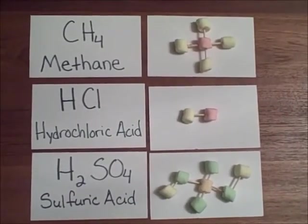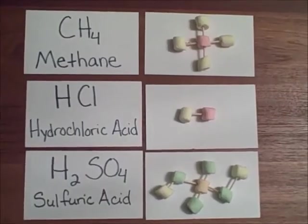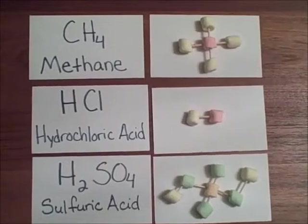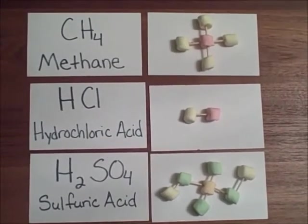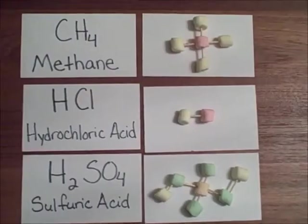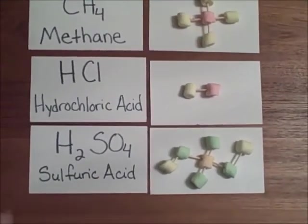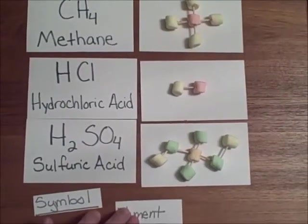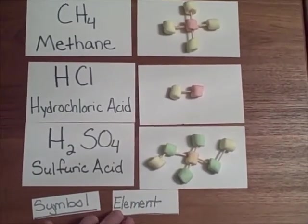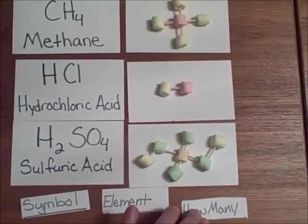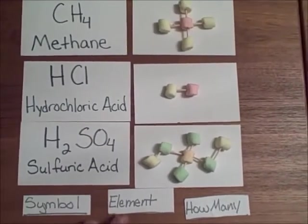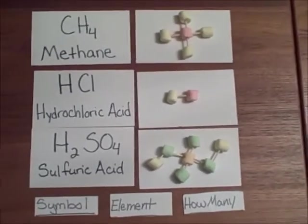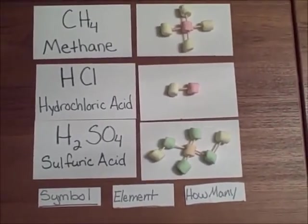So these are three for you to practice with. You have methane gas, which is CH4. Hydrochloric acid, which is HCl. And sulfuric acid, which is H2SO4. For each one of those, I want you to tell me, break them down into the symbols, element names, and how many of each atom you have. Just like we've been doing in class. And just like the other three that we've gone through.